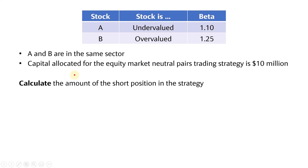In this example, we have a hedge fund manager that wants to implement an equity market neutral pairs trading strategy. The manager will have to long the undervalued stock and then short the overvalued stock. We have stocks A and B that are in the same sector, where stock A is undervalued and stock B is overvalued. We also have the betas of each stock, and the manager allocates a capital of $10 million to this trading strategy.